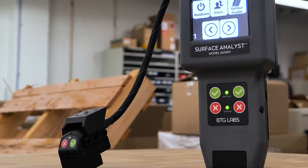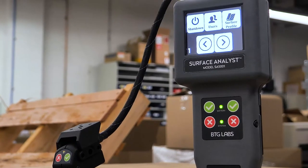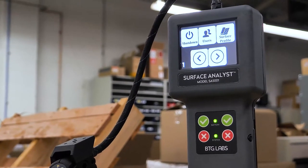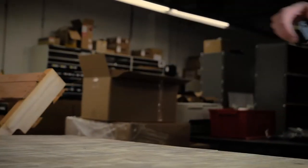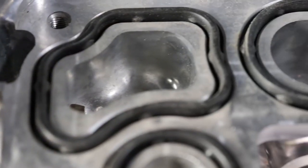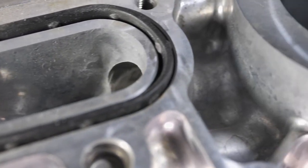The Surface Analyst 5001 was designed to take complicated surface analysis measurements out of the lab and put them directly on the manufacturing floor. In doing this, the Surface Analyst 5001 allows for inspections on any material in any direction and on parts with complex geometries.